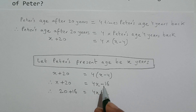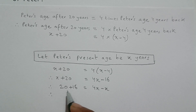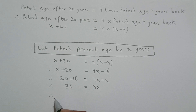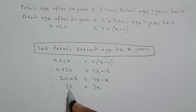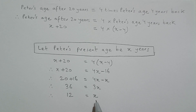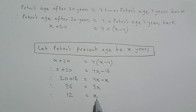So that gives us 20 plus 16 equals 4X minus X. 20 plus 16 is 36, and 4X minus X is 3X. So 36 is equal to 3X. Now I will divide both sides of this equation by 3. 36 divided by 3 is 12, and 3X divided by 3 is X. So I get the value of X as 12.